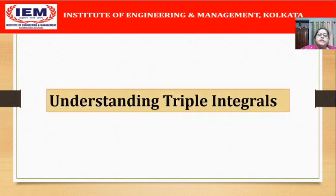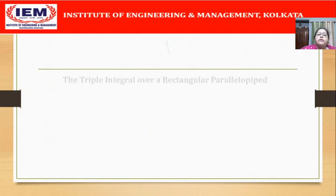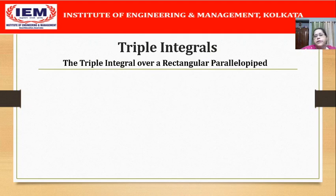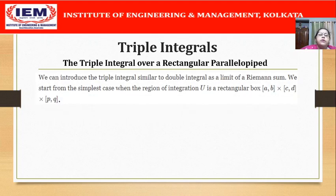As we start our understanding of triple integrals, firstly we will define the triple integral over a simpler region — that is, a rectangular parallelepiped. Later on, we will generalize the definition for a general region u in the three-dimensional space. This introduction of triple integrals will be very much similar to that of double integrals, and triple integrals would also be defined as a limit of a Riemann sum.